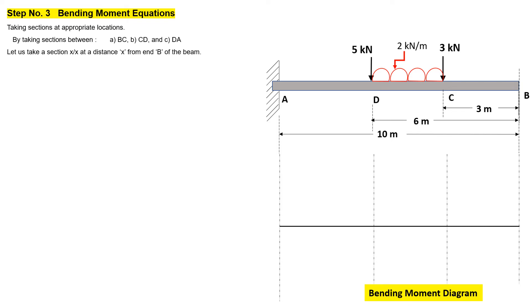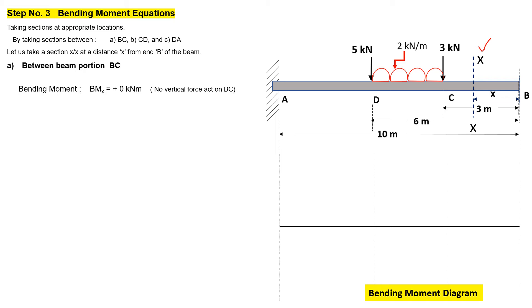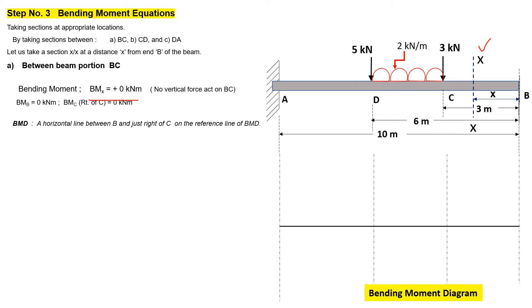Now let us develop the bending moment equations. Taking section XX at distance x from free end B, for the portion B to C: since there is no load on this portion, the bending moment equation gives zero. Bending moment at B is zero and bending moment just right of C is also zero. The bending moment diagram between B and C is a straight horizontal line on the reference line.